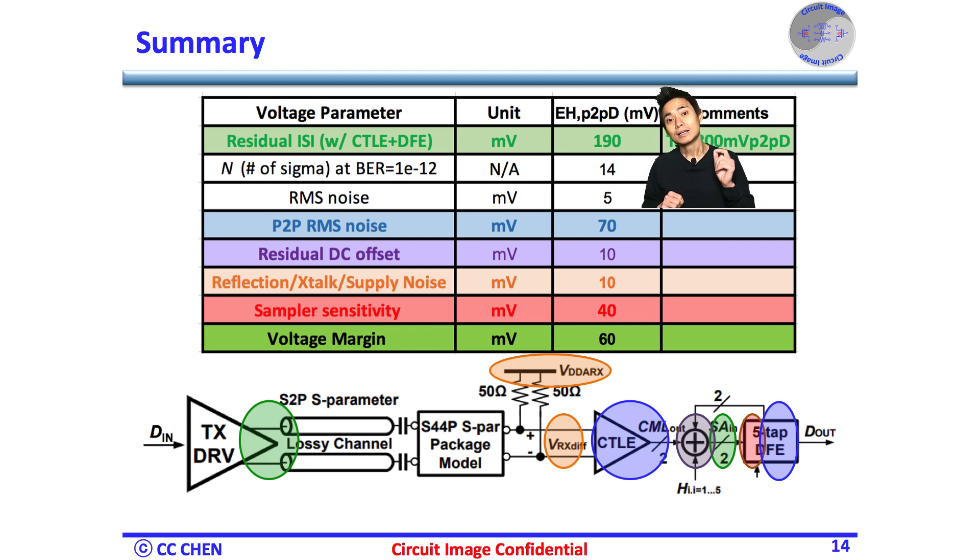Second, the random noise from the circuit would be 5 mV RMS under BER equals 1e-12. The peak-to-peak noise would be 70 mV. Third, the residual offset after the DC offset cancellation would be roughly 10 mV.